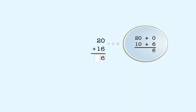Next, we add the tens. Twenty plus ten is thirty. Thirty is three tens. So we put three in the tens place in the answer. So twenty plus sixteen is thirty-six.